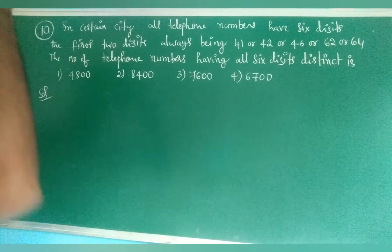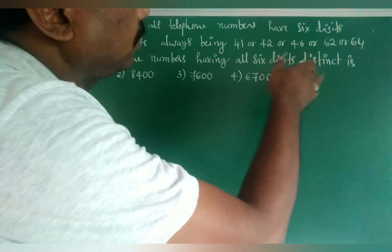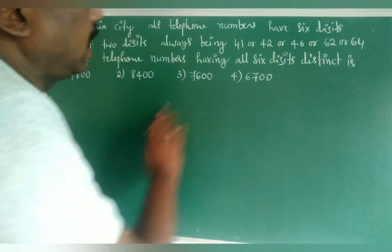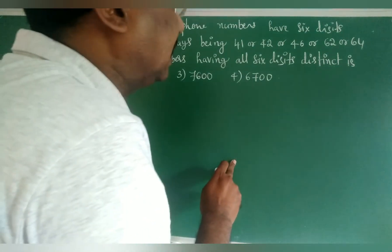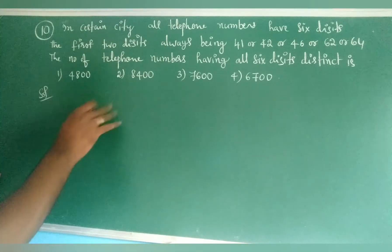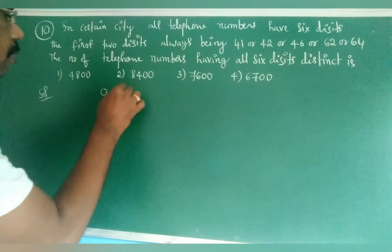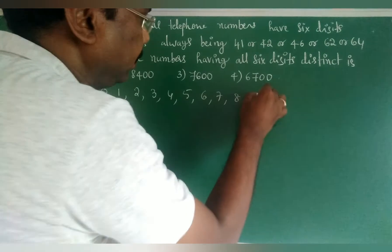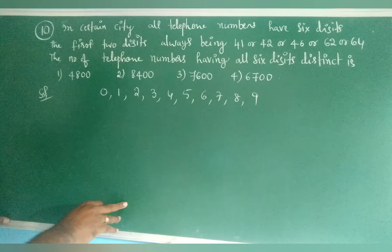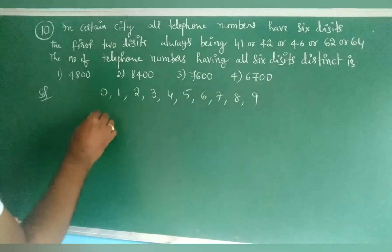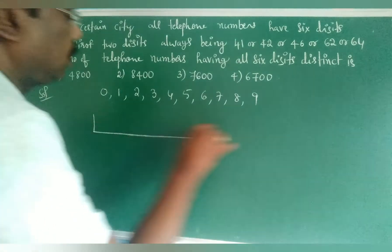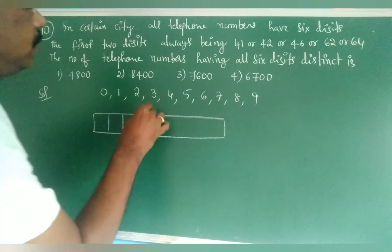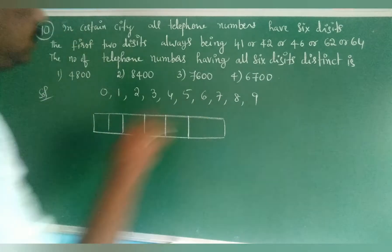Problem 3: In a certain city, all telephone numbers have 6 digits. The first 2 digits always come from: 41, 42, 46, 62, 64. Find the number of telephone numbers having all 6 digits distinct. Consider digits 0 through 9. We take 6 places.